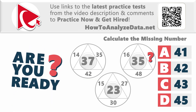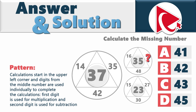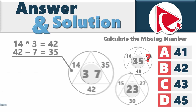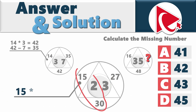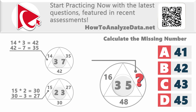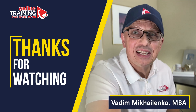The pattern starts in the upper left corner and uses the individual digits of the middle number: the first digit is used for multiplication and the second digit for subtraction. For shape one: 14 × 3 = 42, and 42 − 7 = 35. For shape two: 15 × 2 = 30, and 30 − 3 = 27. Now the missing number: 16 × 3 = 48, and 48 − 5 = 43. The correct answer is choice C — 43.